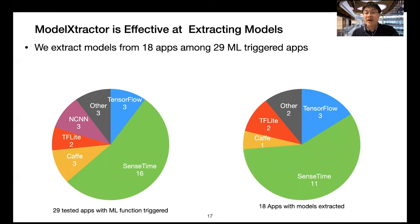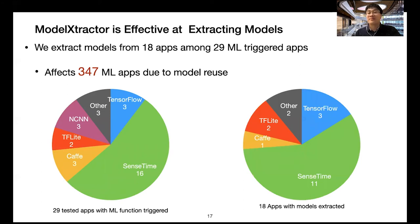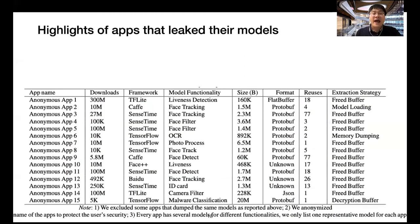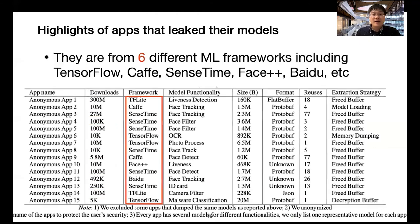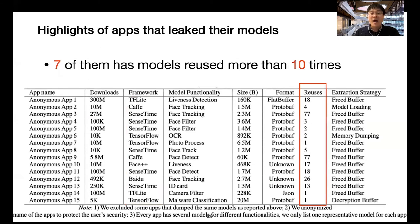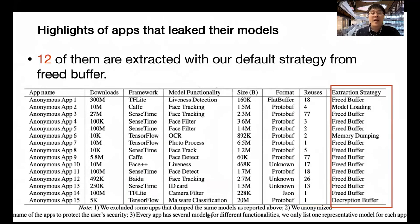We covered most frameworks in our analysis. Considering model reuse, our extracted models affect 346 machine learning apps. For example, eight apps are downloaded more than 10 million times — which is why we anonymized app names to protect users. There are six different machine learning frameworks involved, including TensorFlow, Caffe, Sensetime, MXNN, Fist++, MADU, and others. Seven apps have models reused more than 10 times, and 12 were extracted using our default strategy from the freed buffer.